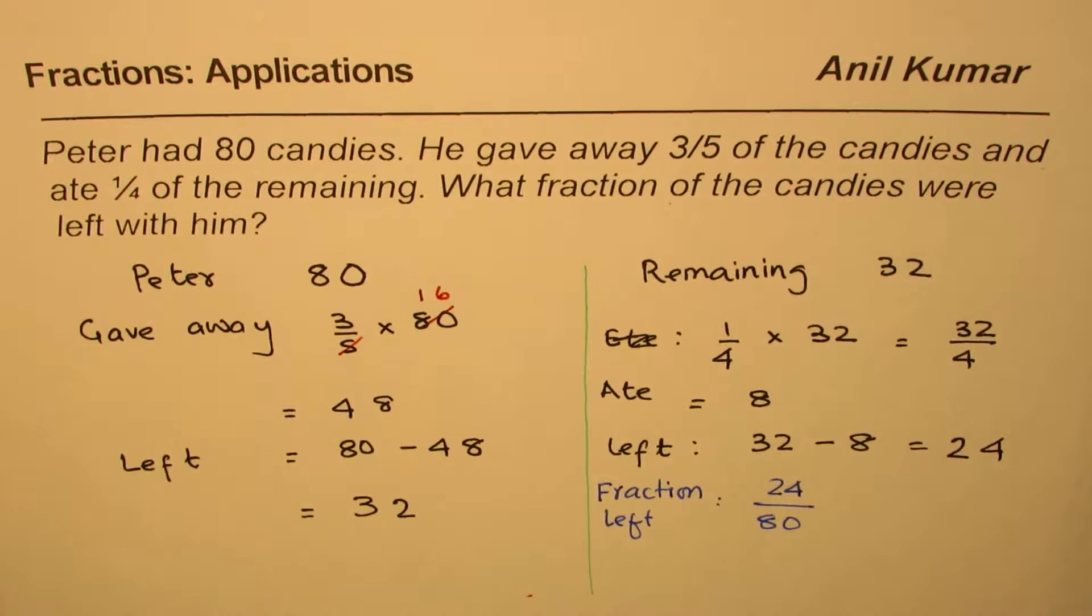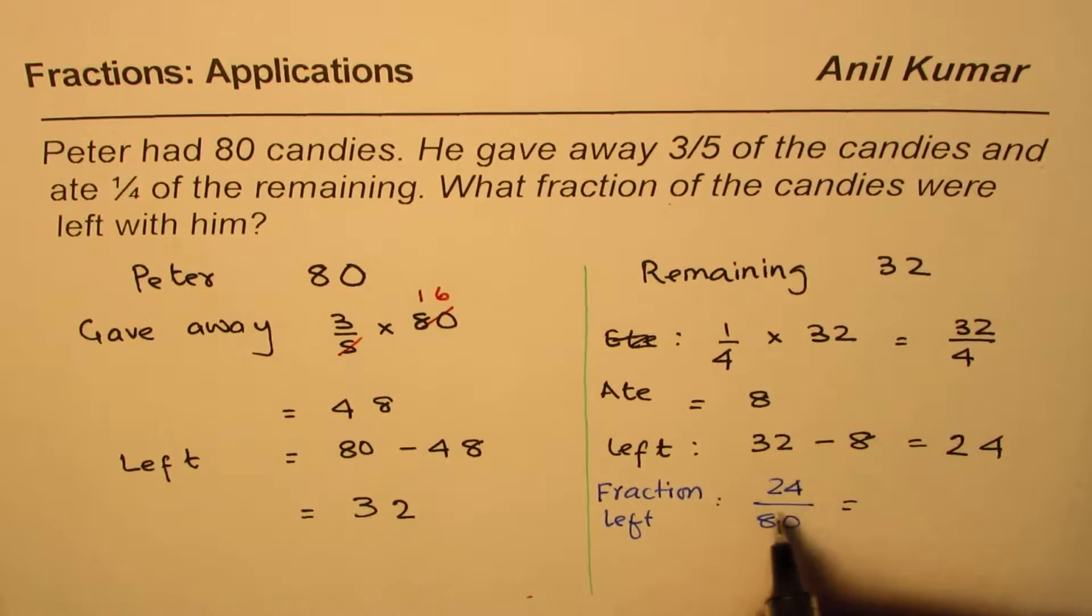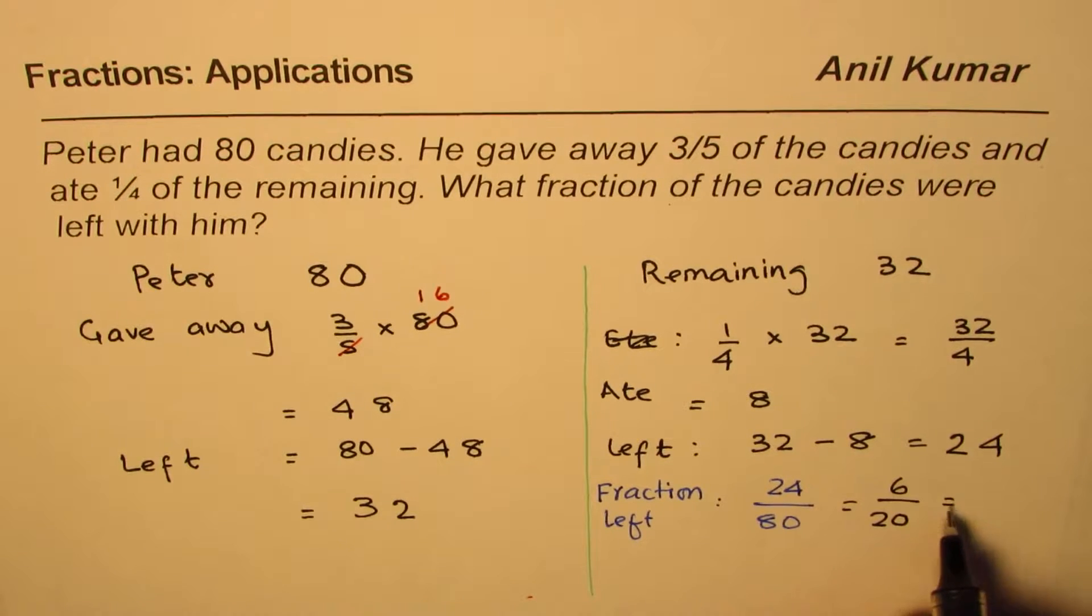This is important to understand. Now you can simplify this, dividing both by 4. 4 times 6 is 24, 4 times 20 is 80. And further, we can divide by 2. So we get 3/10.